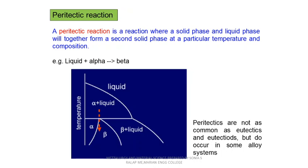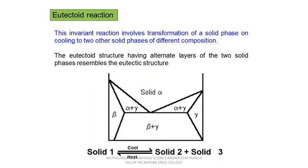Eutectic reactions as well as eutectoid reactions are very commonly found in binary alloys. The eutectoid reaction is an invariant reaction which involves the transformation of one solid, upon cooling, into two-phase solids. In other terms: alpha solid transforms to beta solid plus gamma solid. Alpha, beta, and gamma are distinct phases each with different compositions. So in the eutectoid reaction, one solid phase transforms into two other distinct solid phases.